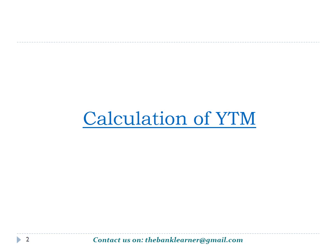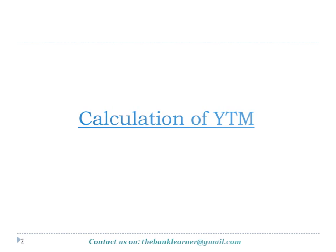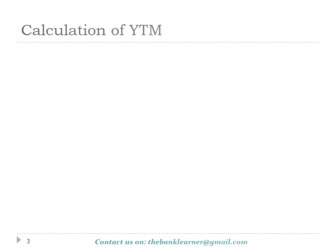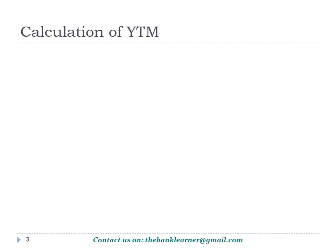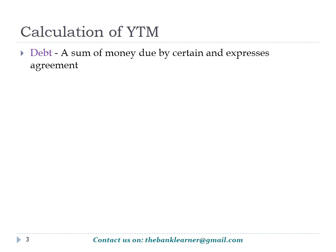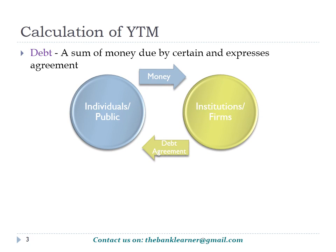In this chapter we are going to learn about the calculation of yield to maturity. Before knowing yield to maturity, we should learn about some basic things such as debts, bonds, and debentures. Debt is a claim for money which is certain and expressed over an agreement. The debt includes bonds and debentures; entities issue these debt agreements to borrow money from the public.